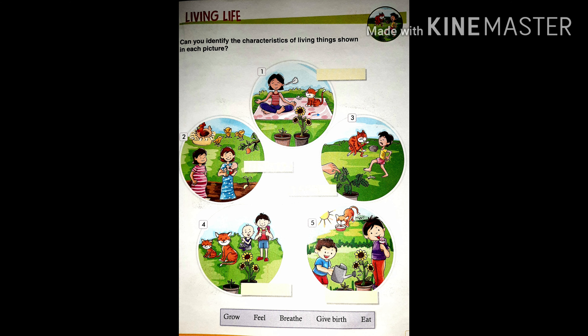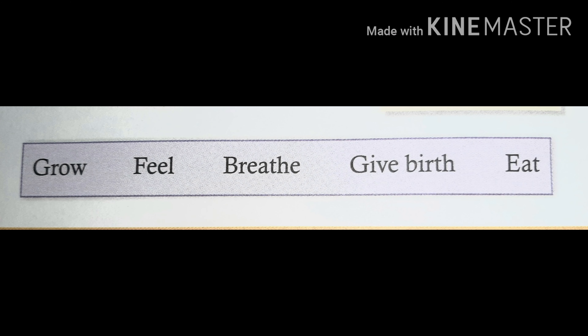Students, I hope you all understand about living things and their characteristics. Here are some pictures and below the pictures they have given you options. You choose the right option and fill in the blanks. The options are: grow, feel, breathe, give birth, eat. These are the characteristics of living things. You have to choose the right option and fill above the pictures. Thank you. Have a nice day. Stay home, stay healthy.